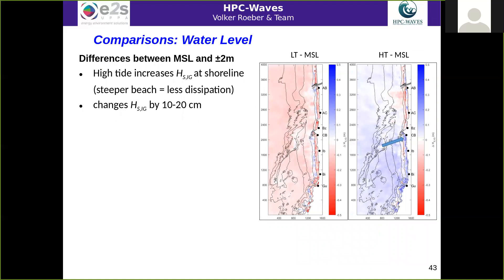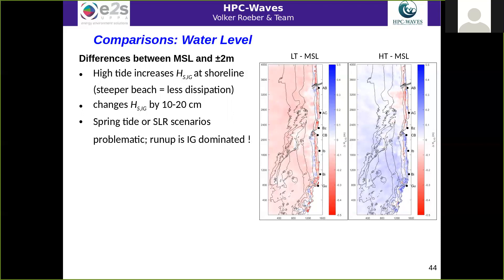What does water level change do to the whole system? Using two different scenarios of plus and minus 2 meters, for the high tide scenario at plus 2 meters, waves break further onshore where the beach is steeper, meaning a shorter surf zone and less dissipation. This changes the infragravity waves by 10 to 20 centimeters. This is of particular interest for spring tide and sea level rise scenarios, because run-up is dominated by infragravity waves, and less dissipation of infragravity waves at high tide stages is quite a problem for this area.